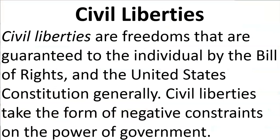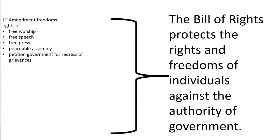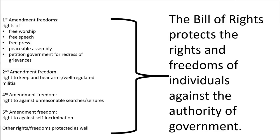Civil liberties are the freedoms that are guaranteed to the individual by the Bill of Rights and the United States Constitution generally. Civil liberties take the form of negative constraints on the power of government. For example, the First Amendment freedoms — rights of free worship, free speech, free press, peaceable assembly, petition government for redress of grievances; the Second Amendment right to keep and bear arms; the Fourth Amendment right against unreasonable searches and seizures; the Fifth Amendment right against self-incrimination — among others listed in the Bill of Rights, are all protected against the authority of government.